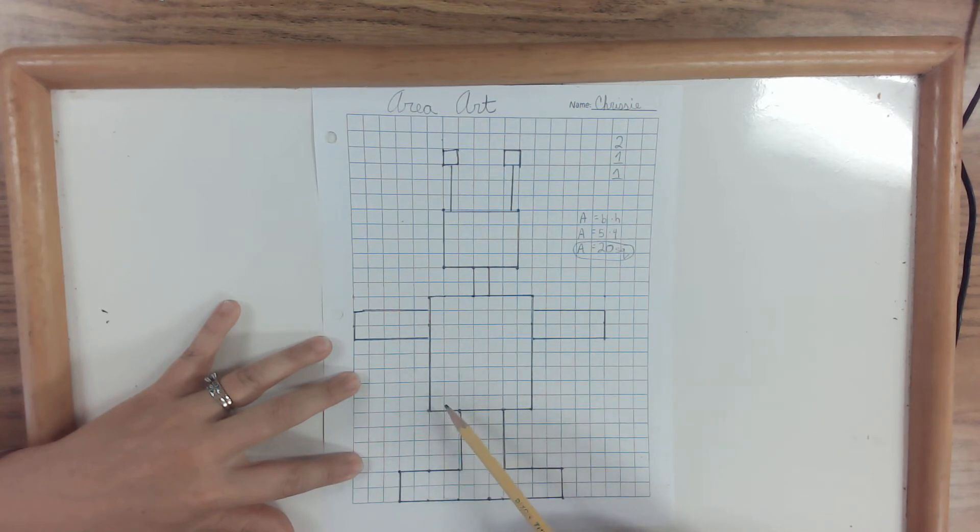The first is my base is one, two, three, four, five, six, seven. And my height is one, two, three, four, five, six, seven, eight. Now, if I know how to do seven times eight, I could very easily just do the area for this.